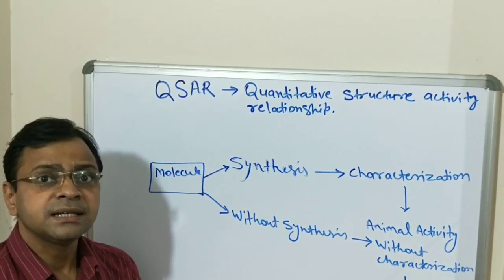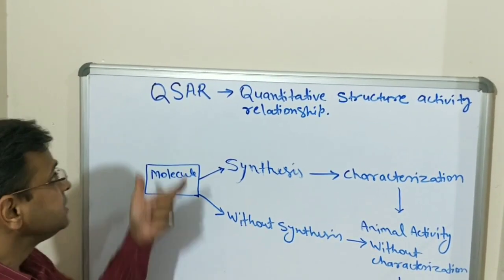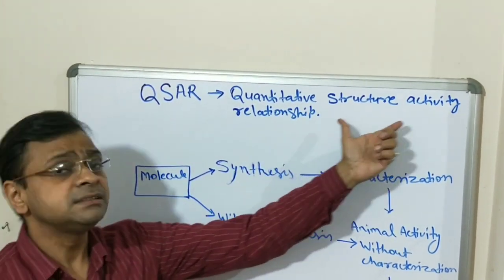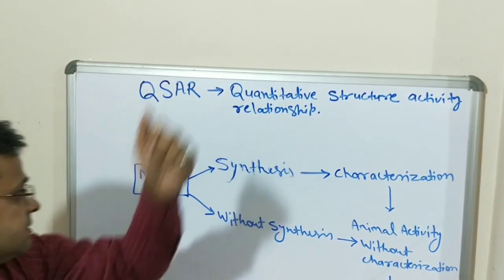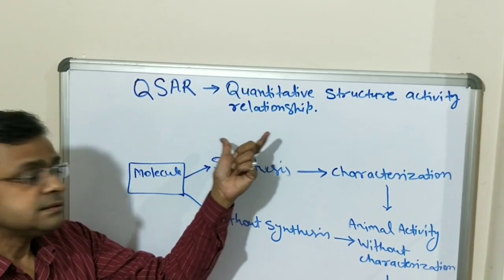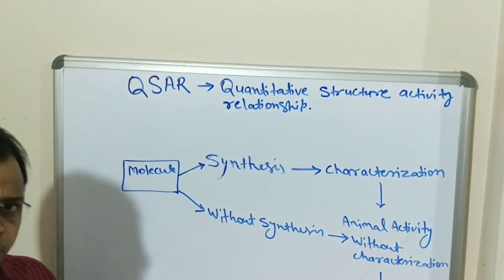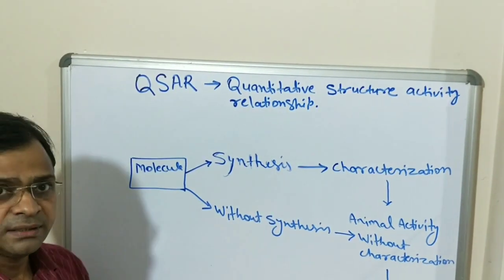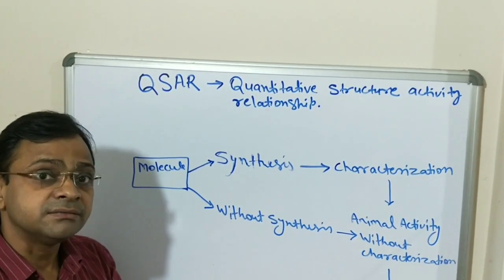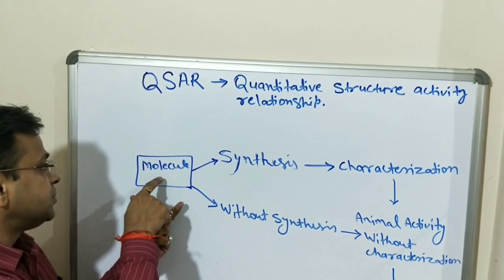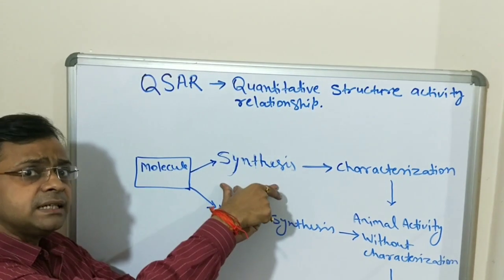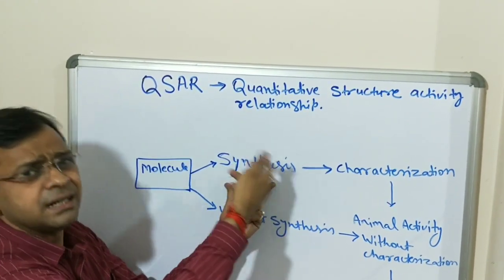I am Armin Sarvaskar and today I will discuss QSAR, that is Quantitative Structure Activity Relationship. This is a technique that is used to predict the activity of a molecule, and the molecule may be synthesized, may be obtained from any natural source or may be from a plant.